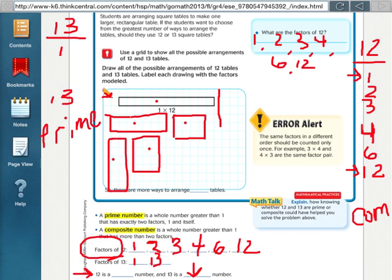So we could go down 12. 1, 2, 3, 4, 5, 6, 7, 8, 9, 10, 11, 12. 12 rows of 1. So that's 1, 2, 3, 4, 5, 6 ways of arranging those 12 tables. But with a 13, you can just do the 1 row of 13 or the 13 rows of 1. So you can't do as many different ways of arranging.